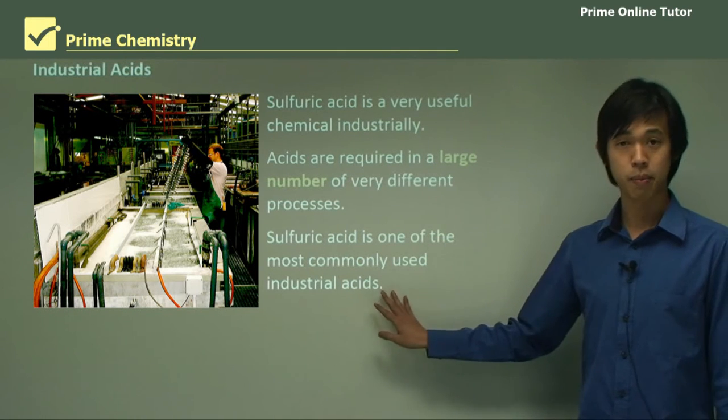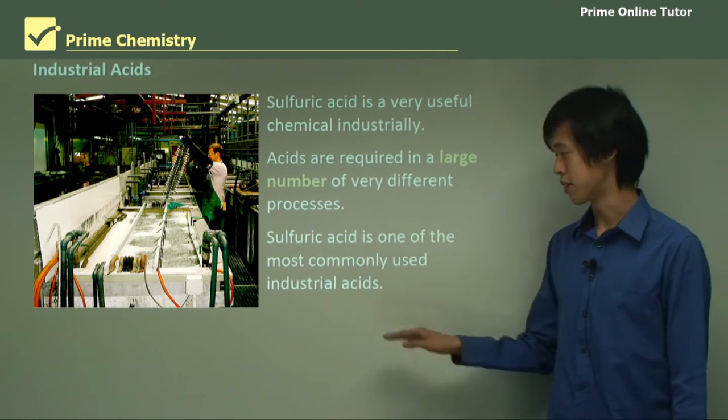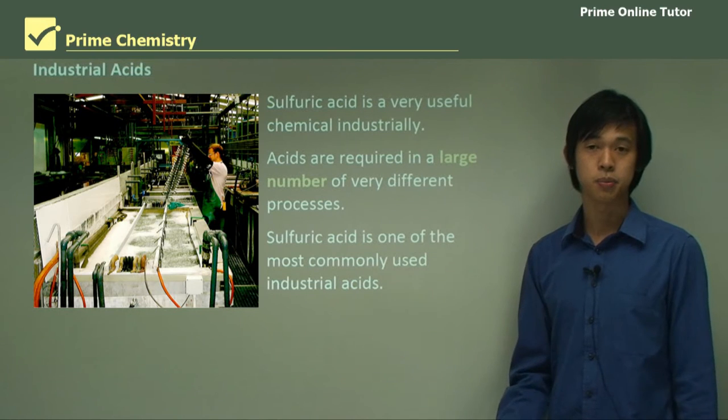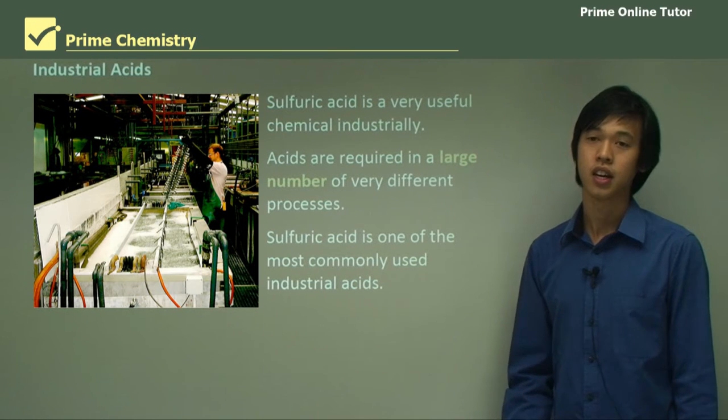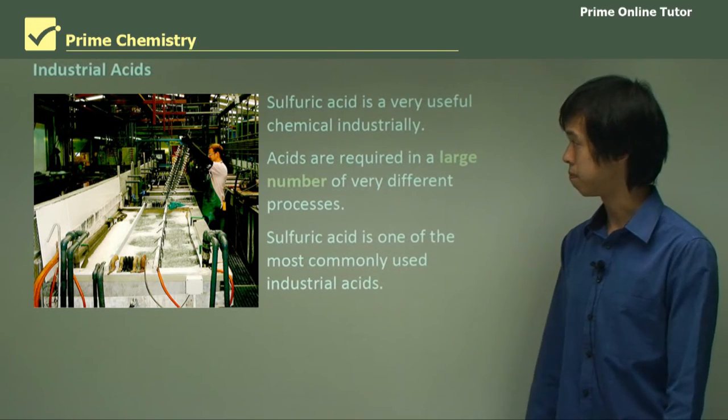Sulfuric acid is probably one of the most common industrial acids produced, along with hydrochloric acid and nitric acid.